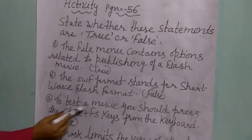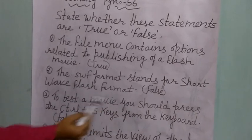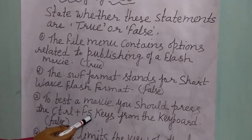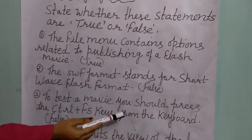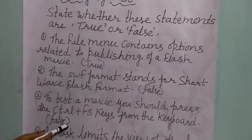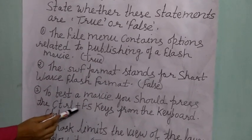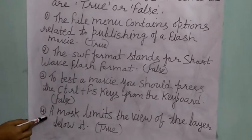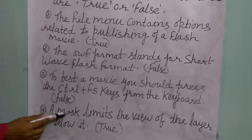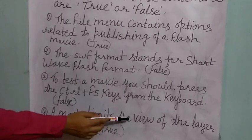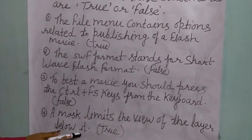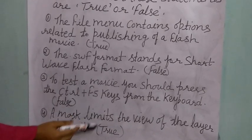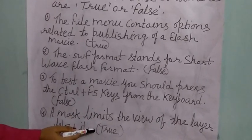Third: to test a movie, you should press Ctrl plus F5 keys from the keyboard — so it's false, that's not true. Ctrl plus F5 is a false statement. Then fourth and last: a mask limits the view of the layer below it — yes, that statement is true.